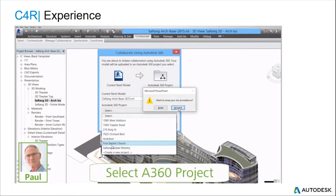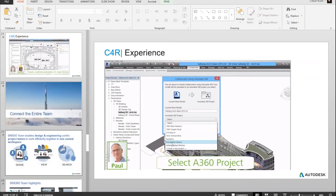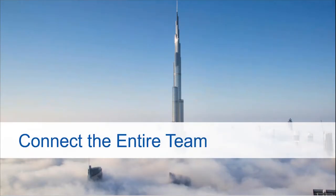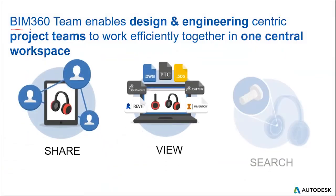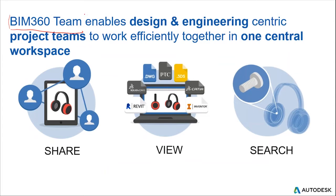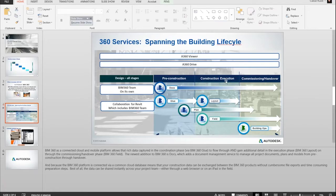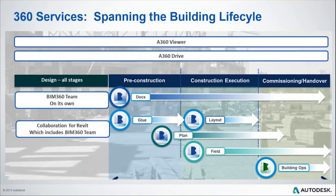Specifically with Collaboration for Revit, let's look at the entire team. The central models get saved into the cloud onto the BIM 360 Team site. Let me show you the services we're really referring to and where we are in the design stages. This is an all-encompassing BIM 360 services from Autodesk slide. If you've ever gone to Autodesk.com and tried to make sense of their cloud strategy, this slide is it.